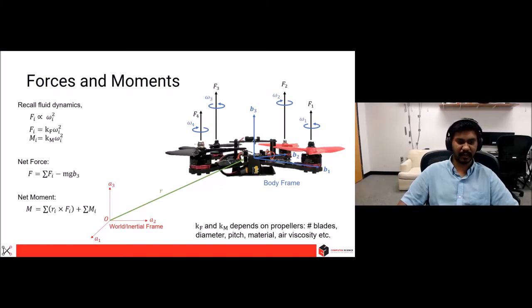And we have the same quadrotor as before, with the world frame being denoted by capital A, which is shown in red, and the body frame denoted by capital B, which is shown in blue.